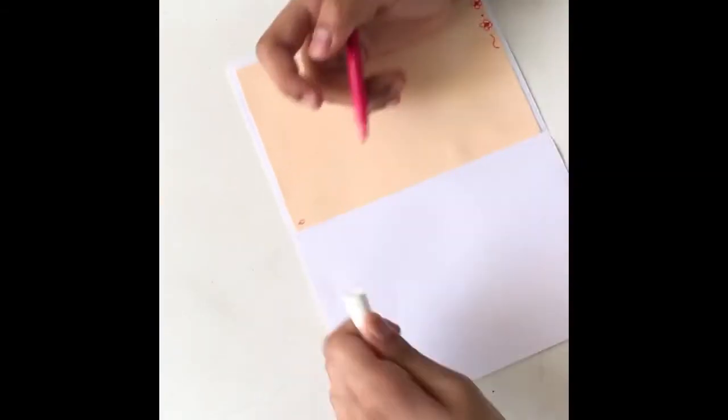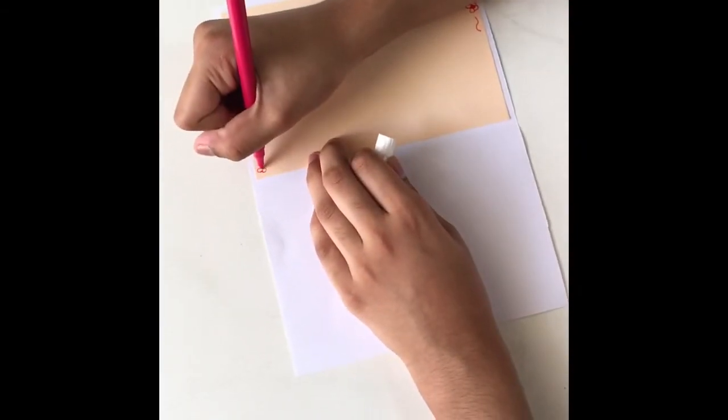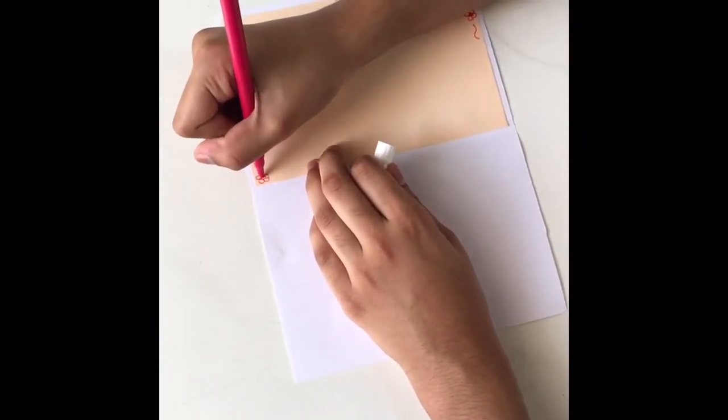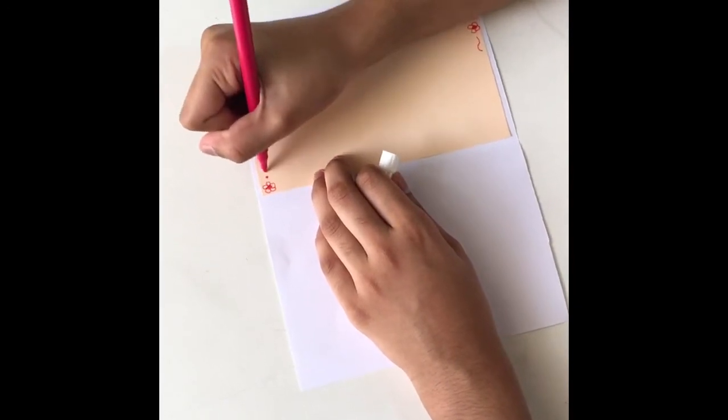Now take the pink sketch pen and try to draw borders. For this we are drawing a flower border. You can draw your border as you like.